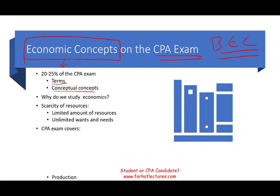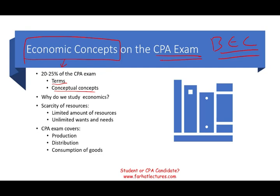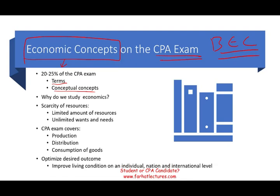The CPA exam will cover how the production, distribution, and consumption of goods works, and the reason is to optimize the desired outcome. What does that mean? It means improving living conditions, whether at the individual, country, or international level. By studying economics, you can optimize those desired outcomes. That's the underlying concept of economics.